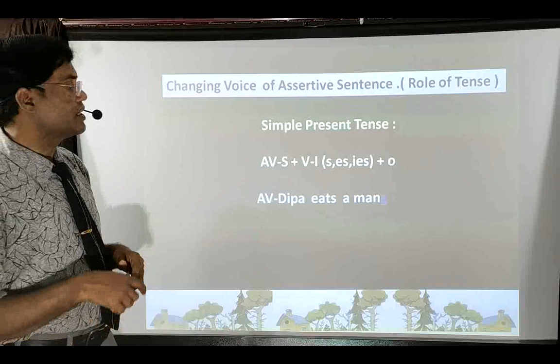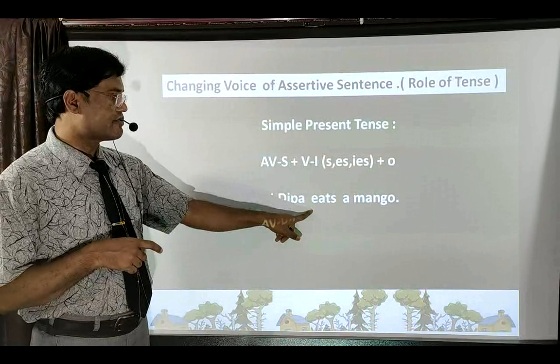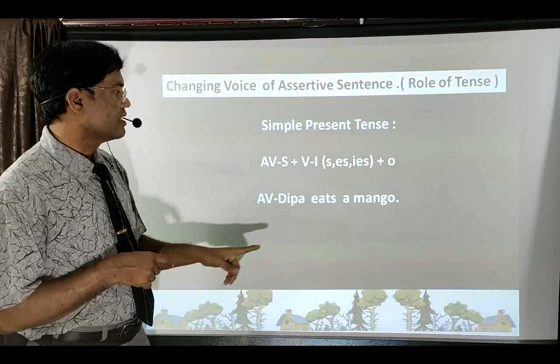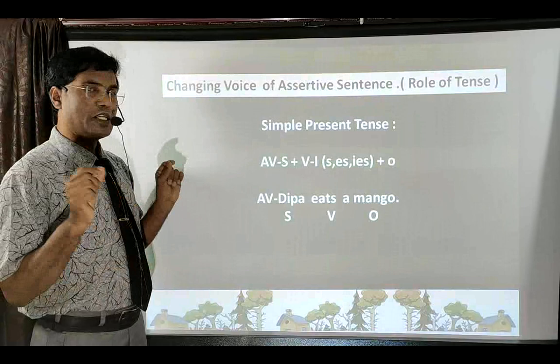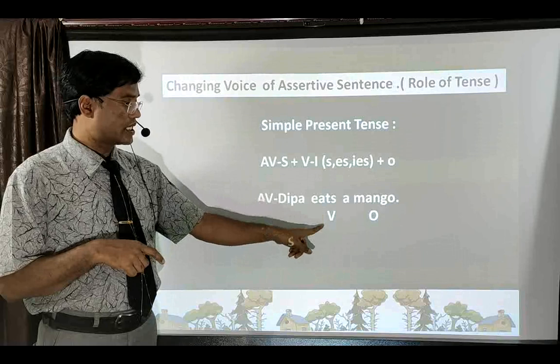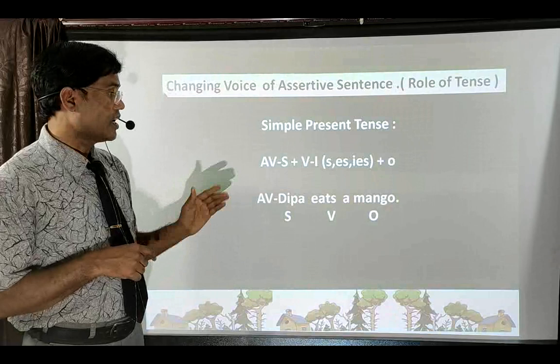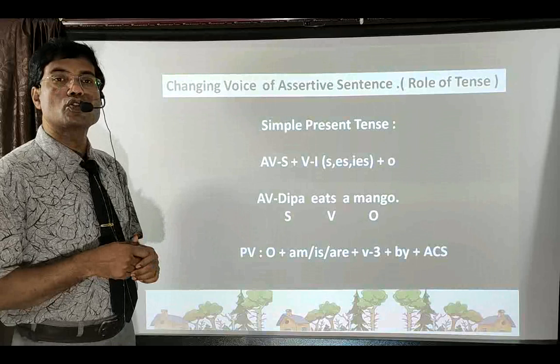If any sentence comes before you like this — see the active voice sentence: subject first is 'Deepa', verb first form is 'eats' (Deepa is third person singular noun, so 's' is added), and at the end 'a mango' is the object. When changing the voice of any sentence, you must first identify subject, then verb, then object.